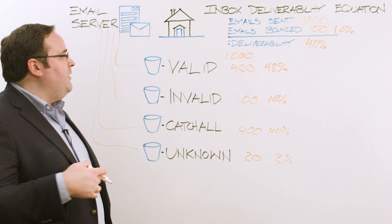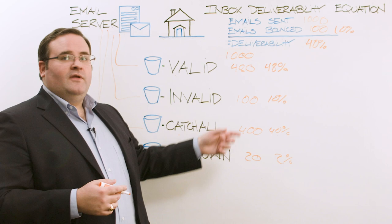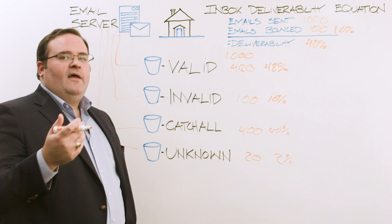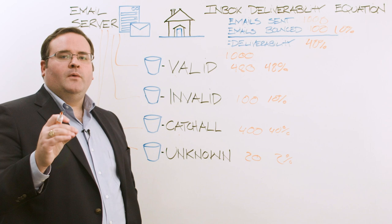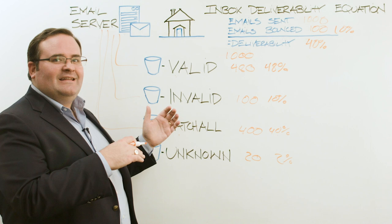If you find yourself in a situation where, after doing this math, you realize your 400 catch-all emails will bounce at 10% — that's 40 emails — you have to ask yourself: am I still going to be under 3%? Am I still going to be under 4%? What is your level of comfort, and what does your email service provider allow? Based on that, we would consider adding more valid emails to the mix to suppress the overall bounce number and ensure a high deliverability rate and a low bounce rate.